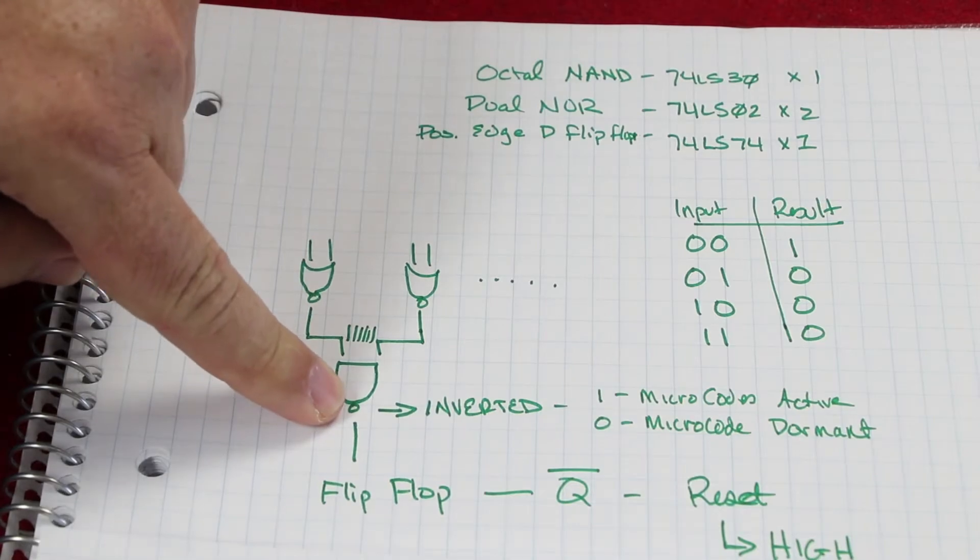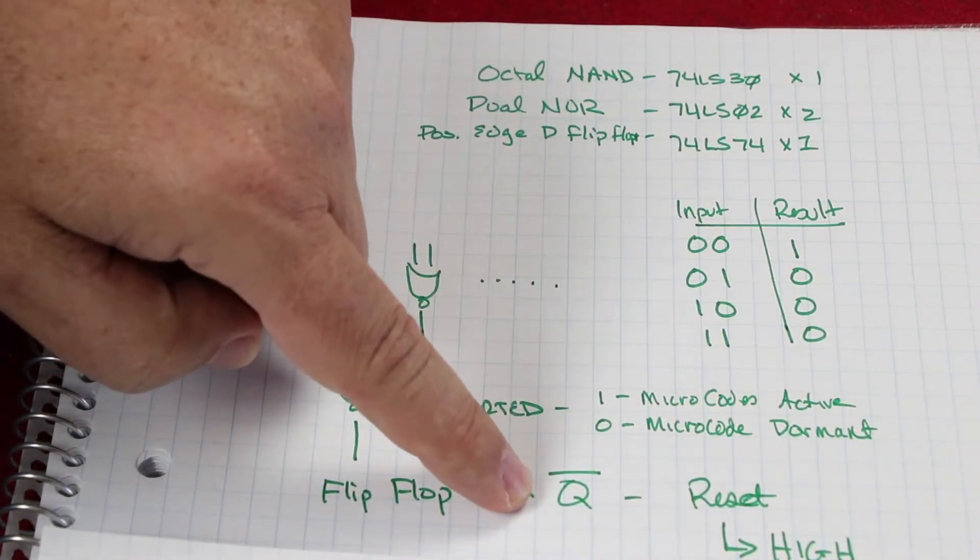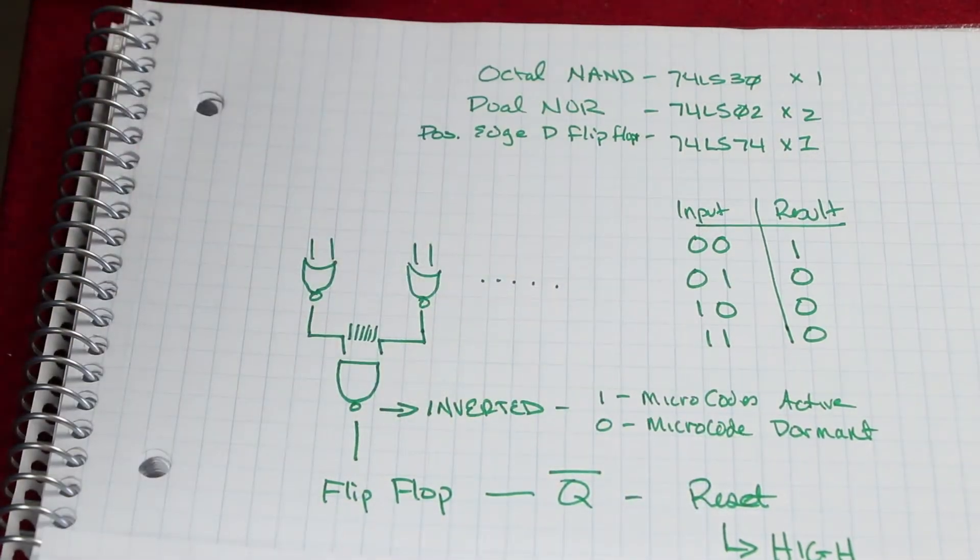I can choose either one. In this case, since it's coming out here as a zero and I want it to be high to engage the reset, I pulled it from Q inverted, which then gets me my reset signal.